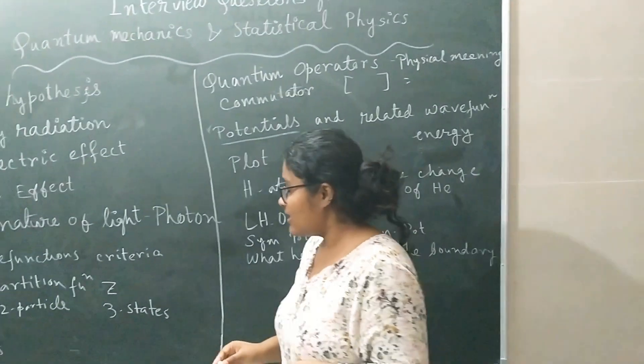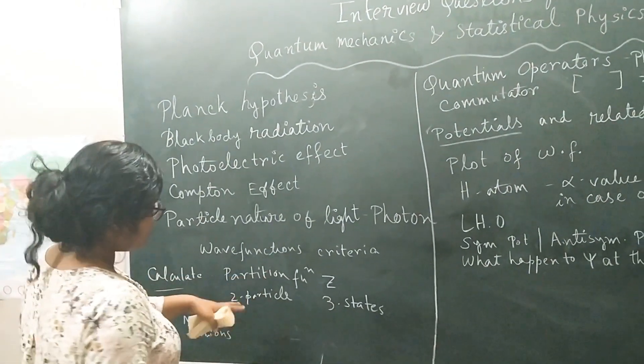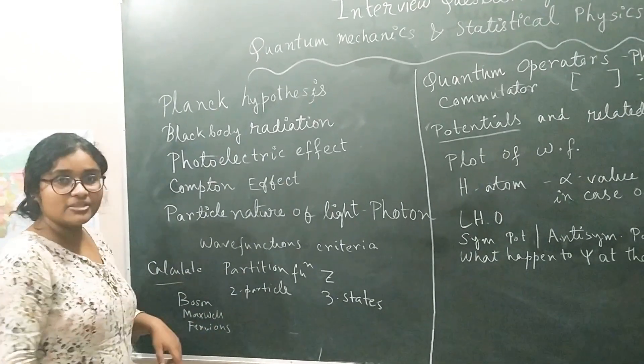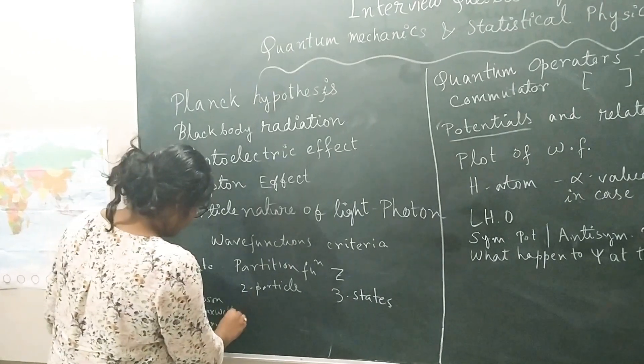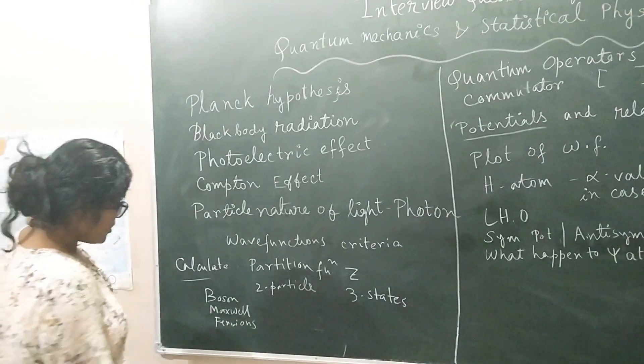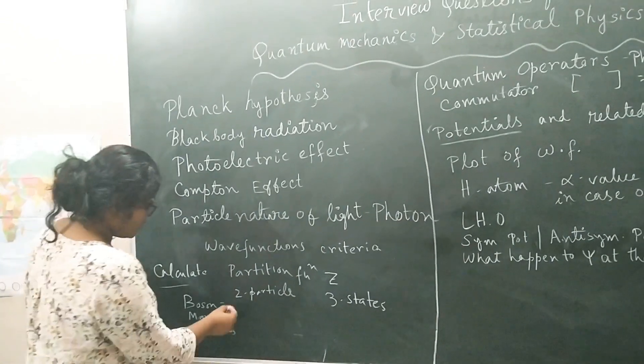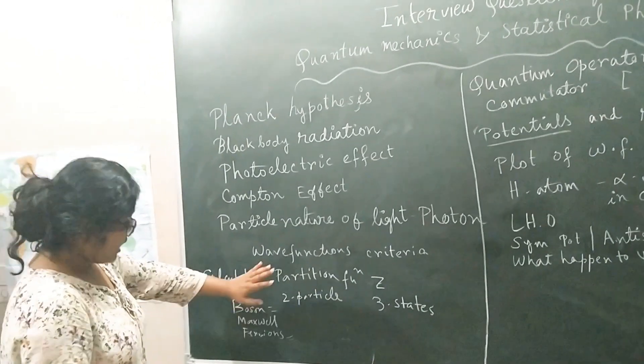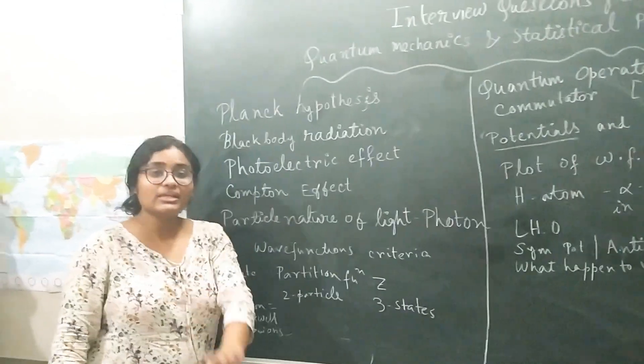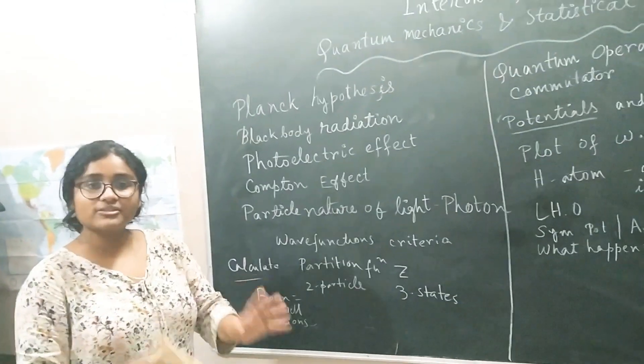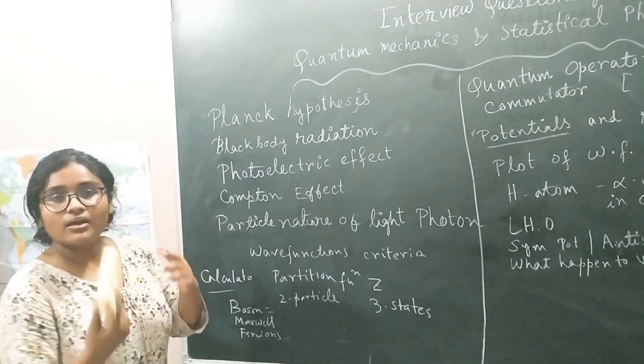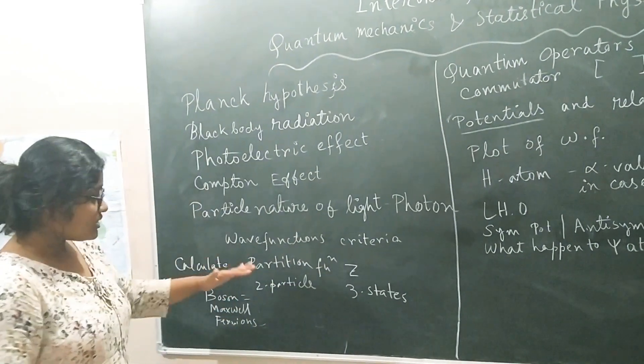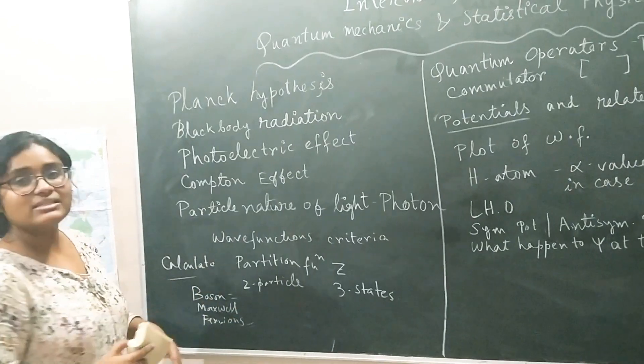Now, come to the statistical physics. They ask you, they calculate the partition function. Suppose you have two particles and three states, what will be the partition function for Maxwell's particle, means classical particles. What will be the partition function for Fermions, what will be the partition function for Bosons, so you have to know the, how to calculate partition function. Why do we need partition function? Because from partition function, you can take energy, you can have Helmholtz-free energy, you can have entropy, so you can have any information of, so partition function is very much important in statistical physics.